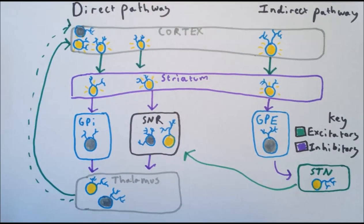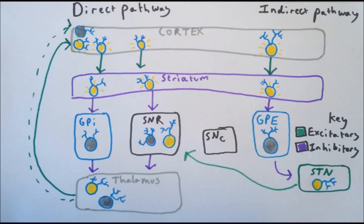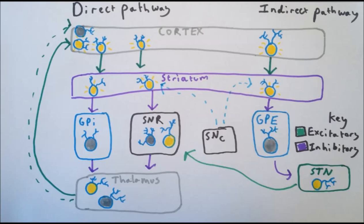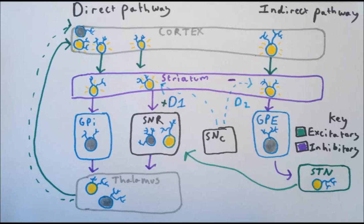The balance of activity between the direct and indirect pathways is modulated by dopamine. The substantia nigra pars compacta contains neurons which use dopamine as their neurotransmitter. These neurons project to the medium spiny neurons of the striatum. The cells of the direct pathway have D1 dopamine receptors. When dopamine binds to these receptors, it excites the neurons, making them more likely to fire, so dopamine increases the activity of the direct pathway. In contrast, cells of the indirect pathway have D2 dopamine receptors. When dopamine binds to these receptors, it inhibits the neuron, making it less likely to fire, so dopamine decreases the activity of the indirect pathway.